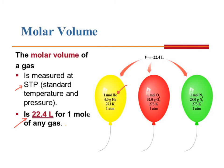At 0 degrees Celsius — which is also 273 Kelvin — and 1 atmosphere, it occupies 22.4 liters. So 1 mole of oxygen, which is 32 grams, is also 22.4 liters. 1 mole of nitrogen, which is 28 grams per mole, is also 22.4 liters. It doesn't matter what the gas is — if you're at the same temperature and pressure, it always occupies the same volume.